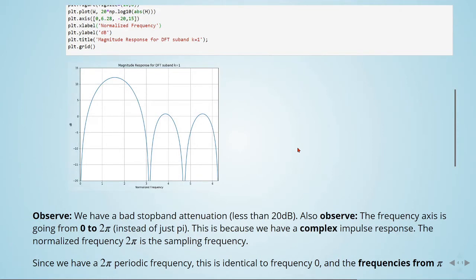Observe we have a bad stop-band attenuation, less than 20 dB. Also observe the frequency axis is going from 0 to 2π instead of just π. This is because we have complex impulse response. The normalized frequency 2π is the sampling frequency.